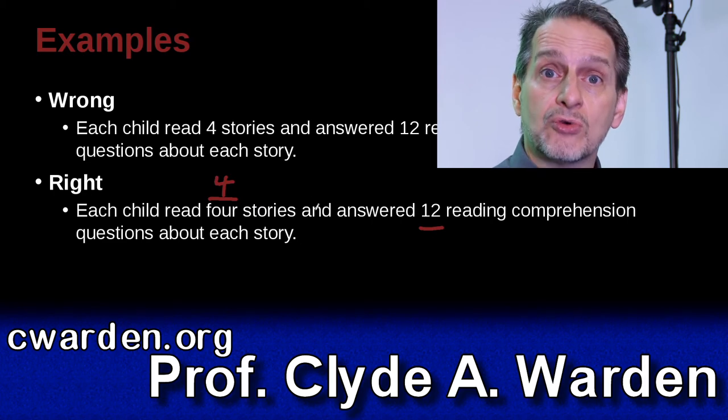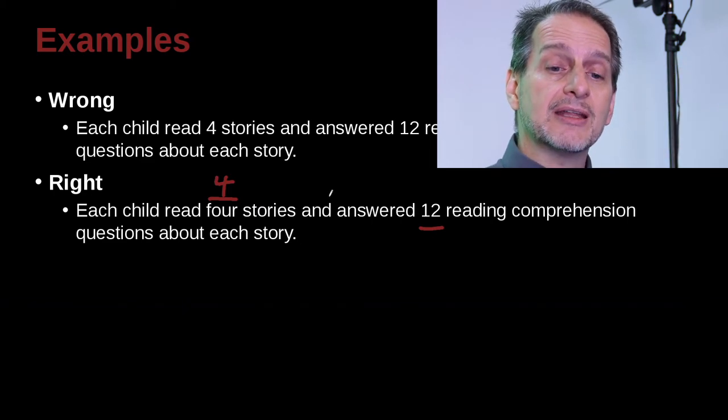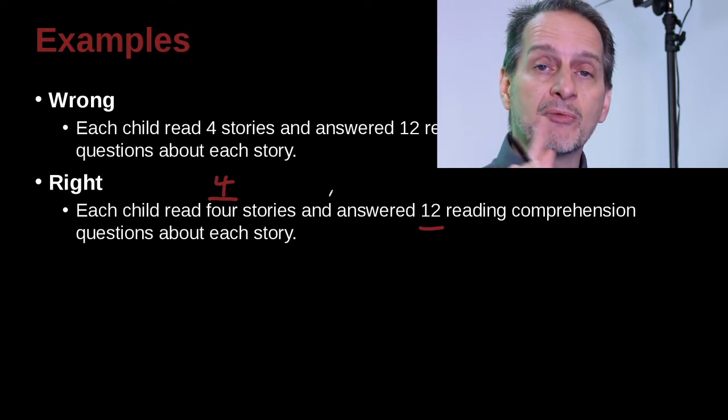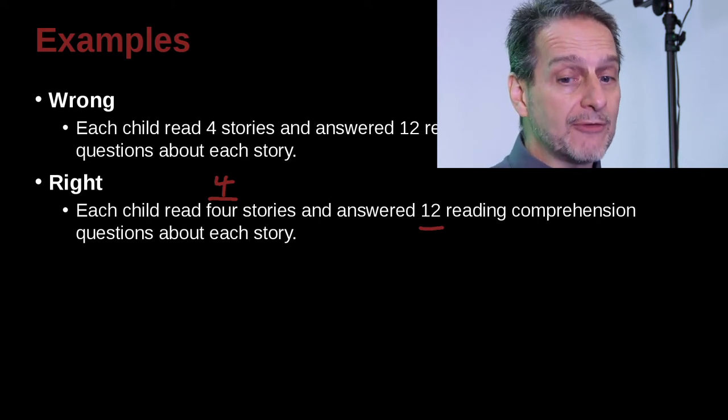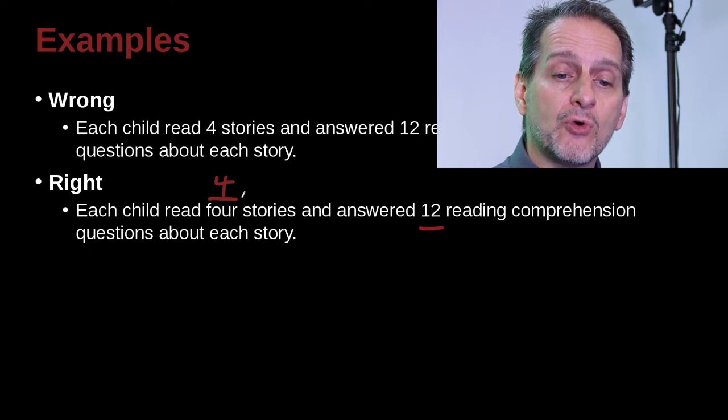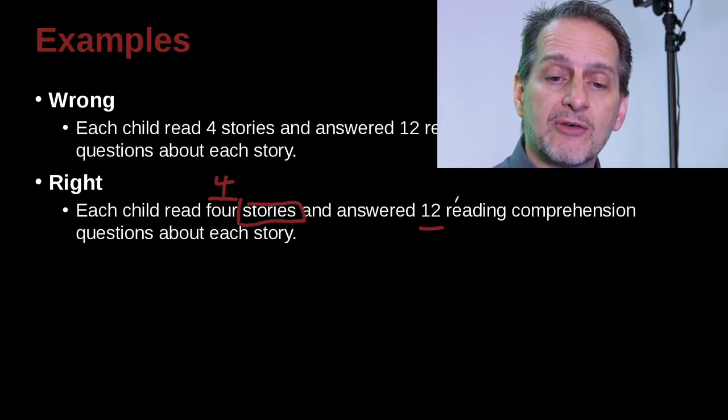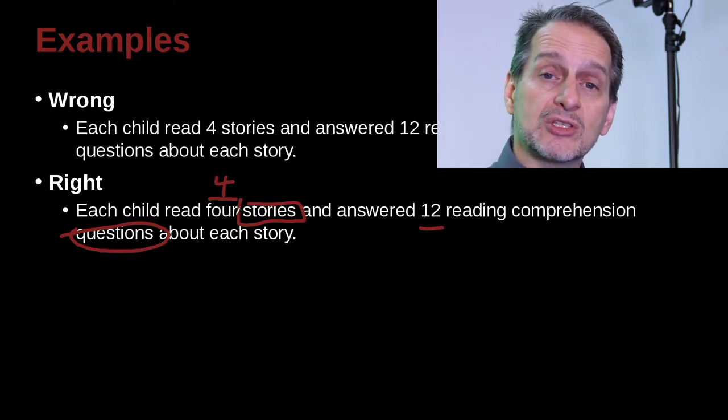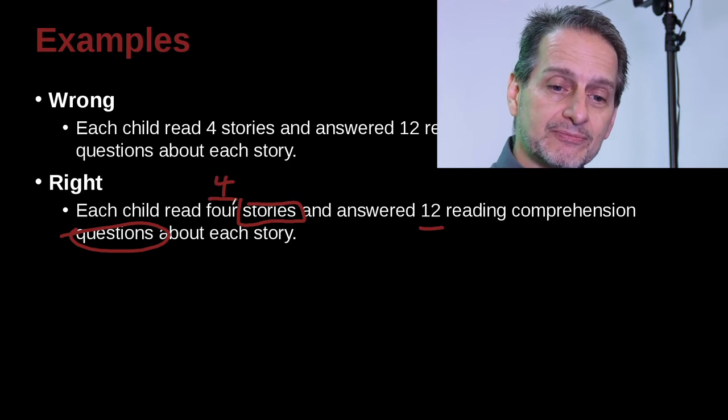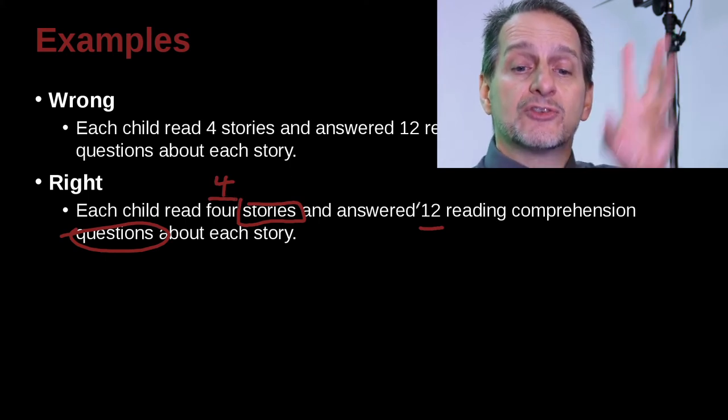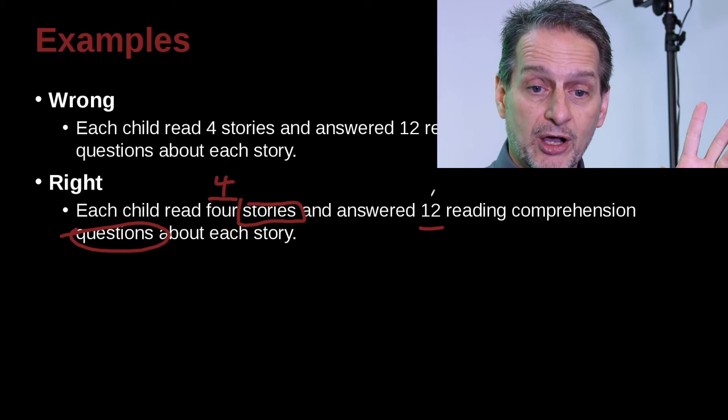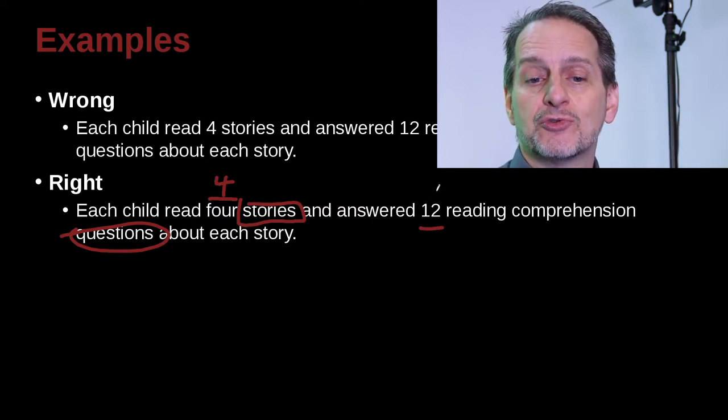And in this case, look carefully. Each child read four stories. If we then said they answered questions about two stories, in that case, these numbers are related and we're trying to compare them. But in the example we have here, that is not the case. We have four stories, and then we have 12 questions. These are different things not being compared. So we just have four stories. Four is less than 10, so we're going to spell it out. 12 is just one time 12 questions. We're not comparing 12 to any other number of questions. So it's 12, and 12 is bigger than 10. So we're going to write the number.